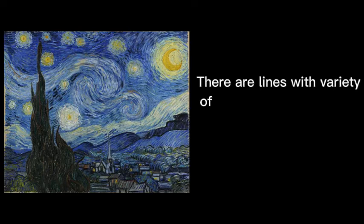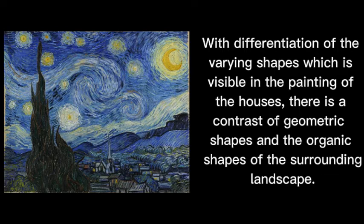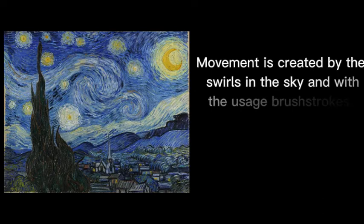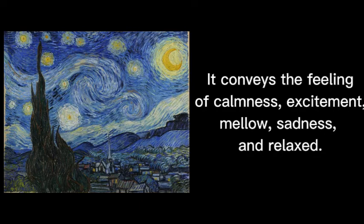There are lines with a variety of thickness and direction in the brush strokes, of which colors vary. With differentiation of the varying shapes, which is visible in the painting of the houses, there is a contrast of geometric shapes and the organic shapes of the surrounding landscape. Movement is created by the swirls in the sky and with the usage of brush strokes. Also, the tree creates a sense of motion as it has wavy lines. It conveys the feeling of calmness, excitement, mellow, sadness, and relaxed.